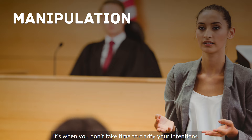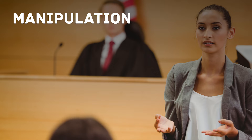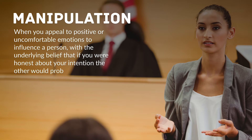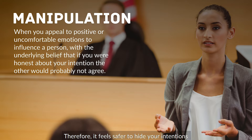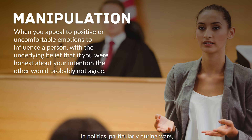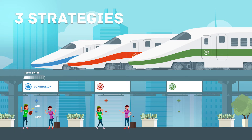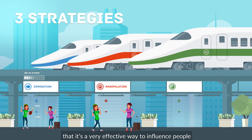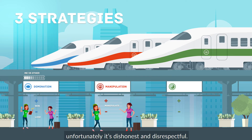It's when you don't take time to clarify your intentions. Manipulation is when you appeal to positive or uncomfortable emotions to influence a person, with the underlying belief that if you were honest about your intention, the other would probably not agree. Therefore, it feels safer to hide your intentions and be manipulative. In politics, particularly during wars, manipulation is done through propaganda. The benefit of manipulation is that it's a very effective way to influence people — we manipulate others to get what we want. Unfortunately, it's dishonest and disrespectful.